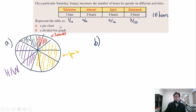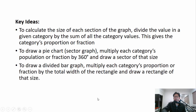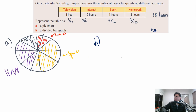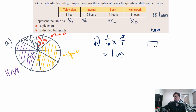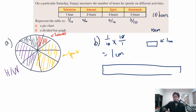Now let's have a go at part B — drawing a divided bar graph. To draw one, multiply each category's proportion or fraction by the total width of the rectangle and draw a rectangle of that size. Let's say the total width is 10 centimeters. So we do 1 over 10 times 10, which gives 1 centimeter for television. Internet is 2 centimeters, sport is 4 centimeters, and homework is 3 centimeters. If you have a ruler, please use it to draw these accurately.